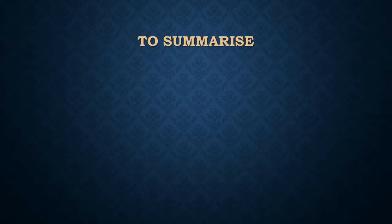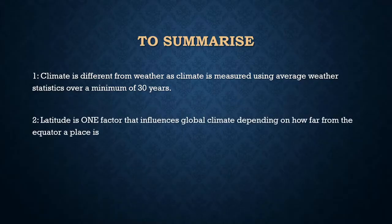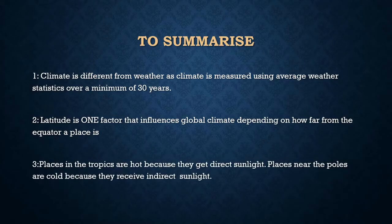Before we end this video, let's quickly summarize what we have learned. Firstly, climate is different from weather — weather refers to conditions over a few hours, whereas climate refers to general atmospheric conditions over a very long period of time. Secondly, latitude is a factor that affects the temperatures and rainfall of different regions around the world based on how far from the equator that region is. And finally, the reason latitude makes equatorial regions hot and polar regions cold and dry is because of how much direct sunlight the place receives, not how many hours of sunlight. Thank you for watching — I hope you found the information entertaining and educational.